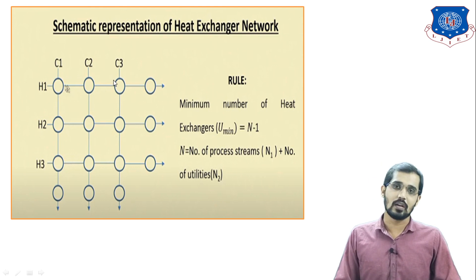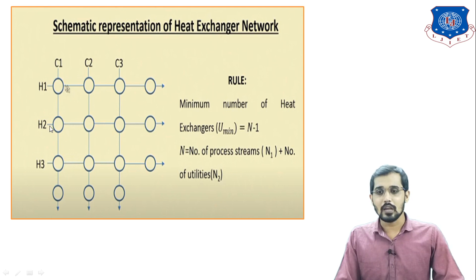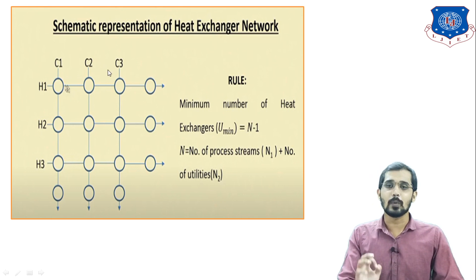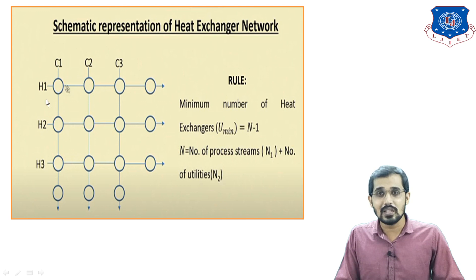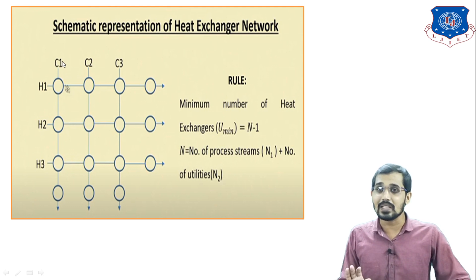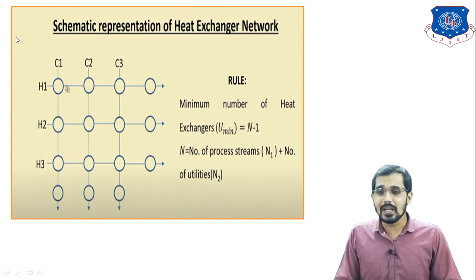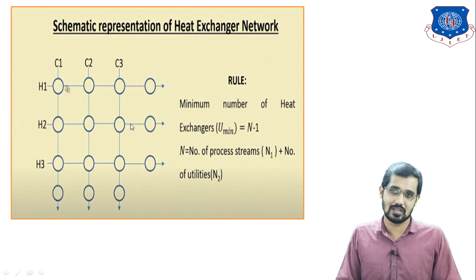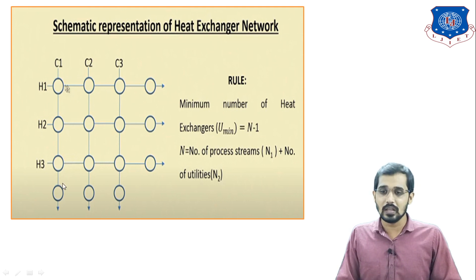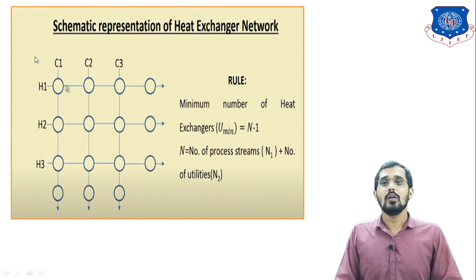This is the systematic representation of the heat exchanger network. You can see H1, H2, H3, C1, C2, C3 — these are process streams, not heat exchangers. These are the hot streams and cold streams. I am exchanging heat between this hot stream and cold stream without using any external utility. I am using only the inlet cold stream and inlet hot stream. I can exchange heat from the hot stream to the cold stream by using heat exchangers — all the circles you see are heat exchangers.